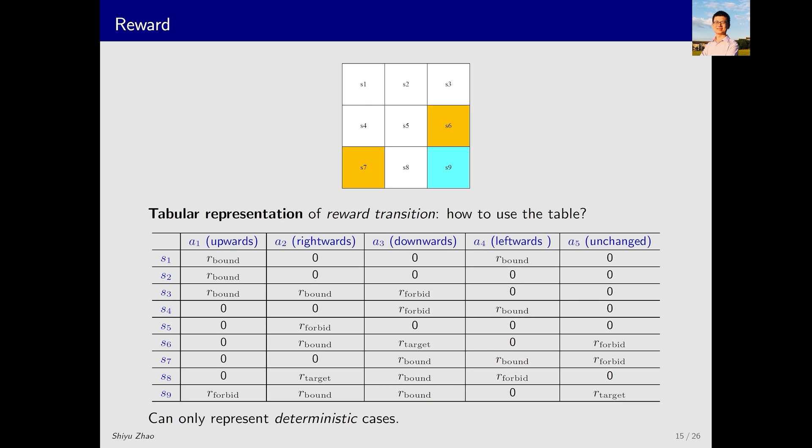Rewards can also be represented using a table. In this table, each row corresponds to a state, and each column corresponds to an action. For instance, in state S1, if I take action A1, the reward is R_bound. This tabular representation is quite intuitive, but has limitations.